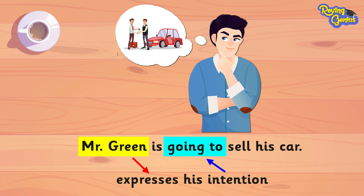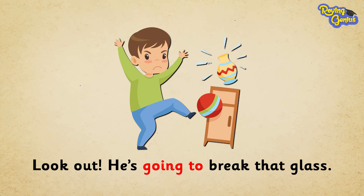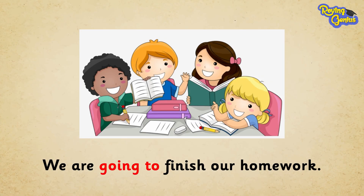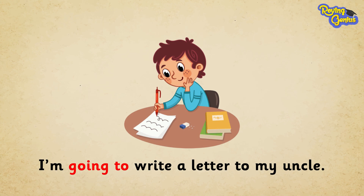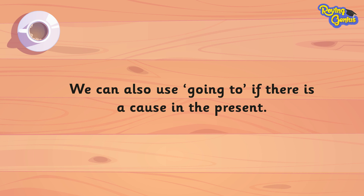Let us see some more examples. 'Look out, he's going to break that glass.' 'We are going to finish our homework.' 'I'm going to write a letter to my uncle.' We can also use 'going to' if there's a cause in the present.